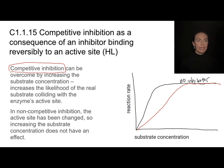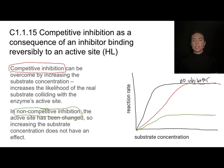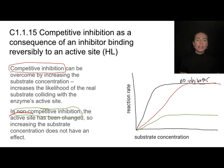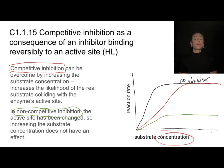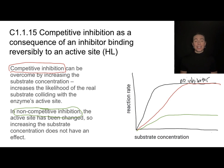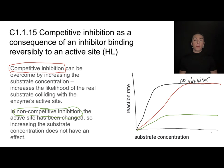In non-competitive inhibition, you never reach the same maximum rate. That's because the allosteric inhibitor has changed the shape of the active site. Even if you increase the concentration of the real substrate to very high levels, it doesn't matter — you've changed the enzyme's active site shape, so increasing concentration has no positive effect on the reaction rate.